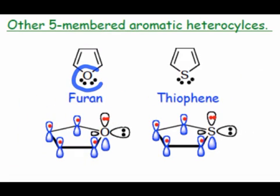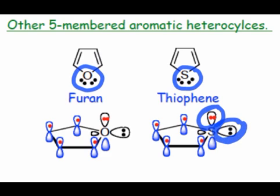First, if we replace the NH group of pyrrole with oxygen or sulfur, we arrive at furan or thiophene, respectively. As we've seen previously, the O and S atoms in these molecules contribute two electrons to the pi system and leave a lone pair as part of the sigma system of the molecule.